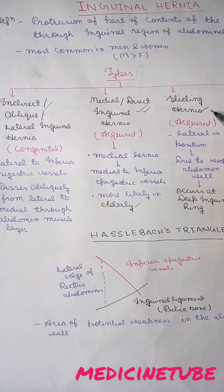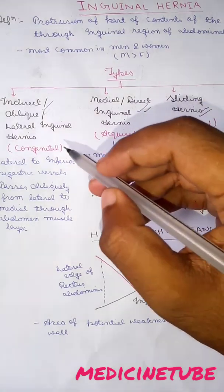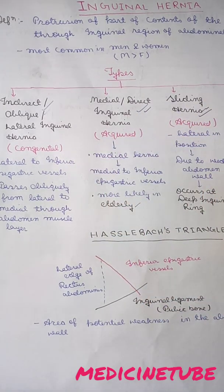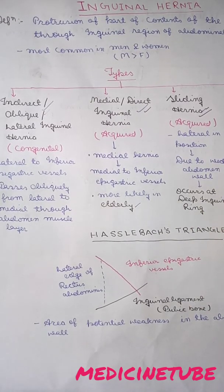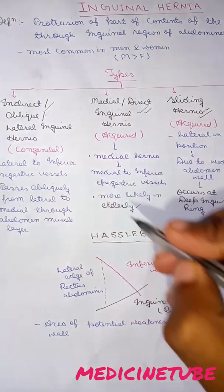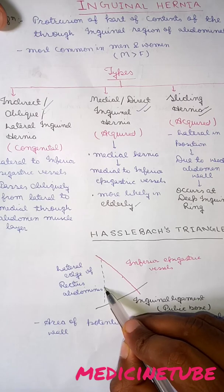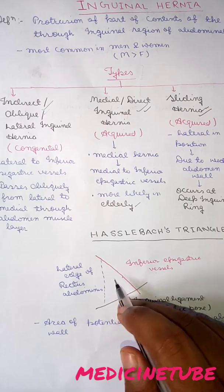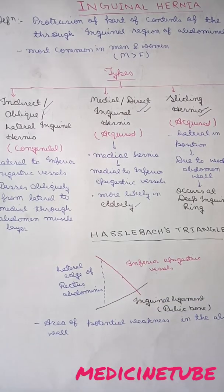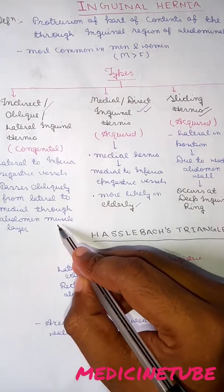We also have two more types: sliding hernia and pantaloon hernia. Indirect inguinal hernia is congenital. It is also called lateral or oblique inguinal hernia. It is called lateral because it is lateral to the inferior epigastric vessel. It is called oblique because it passes obliquely lateral to medial through the abdominal muscle layer.